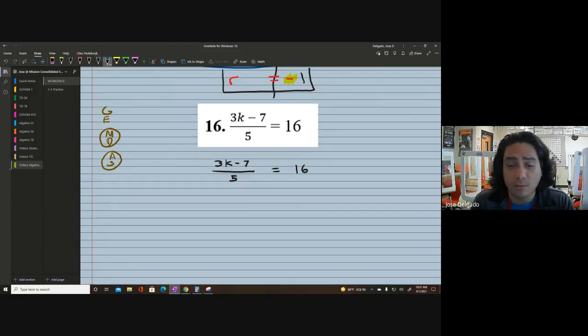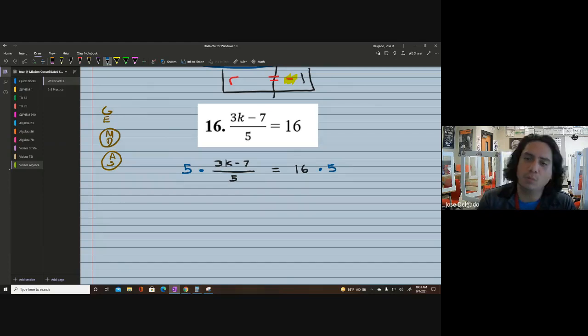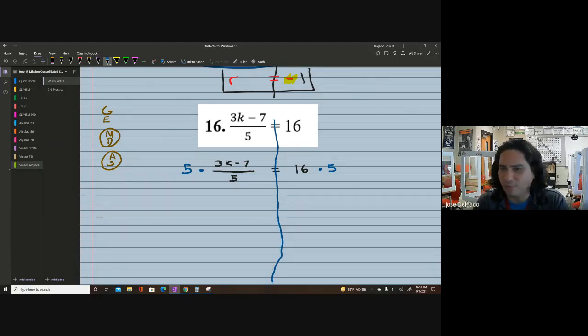GEMDAS. I keep throwing it up there because I want everyone to make sure they understand. We're not doing this because it's random. We're not doing this because Mr. Delgado decided to make some steps up. We're doing this because the order of operations goes in every single thing we do. Sometimes we either work forwards and sometimes we work backwards. It really depends on the problem.